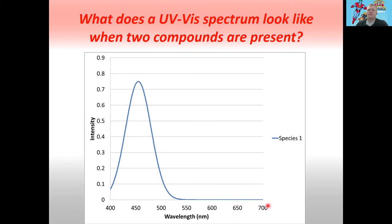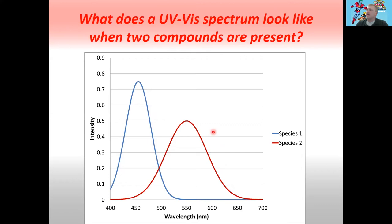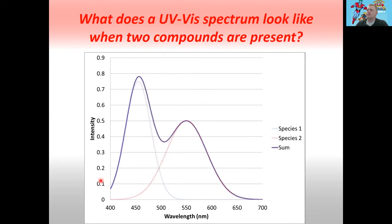Now let's say that we have a second species — species two — that has an absorption spectrum represented by this red line here. What happens if we have both of these species in our solution together? Well, what we'll get is an absorption spectrum that looks like this — it's both of those two spectra added together. So you'll see that in parts of this spectrum the signal is overlapping.